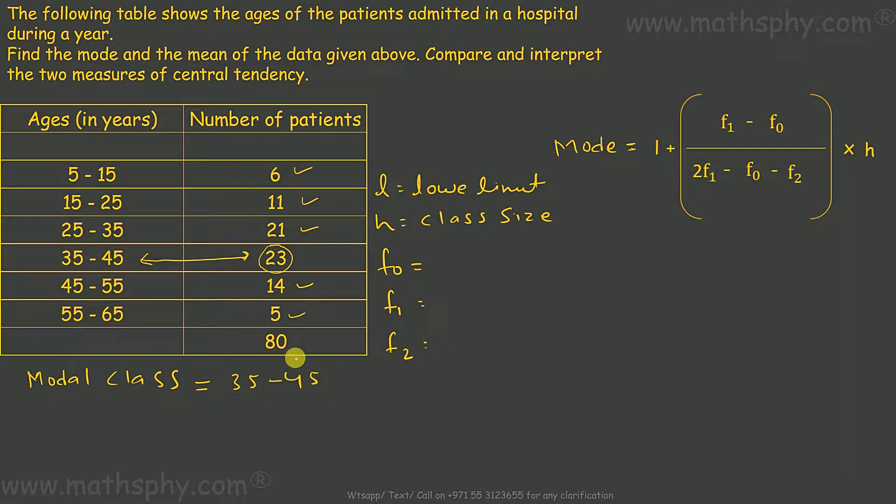Modal class is 35 to 45 because this class is occurring most of the time with highest frequency from this data. This is my frequency. Lower limit L would be the lower class of this modal class, which is 35. Class size means upper side minus lower side: 45 minus 35 gives you 10, so the class size is 10.